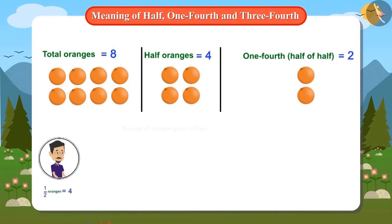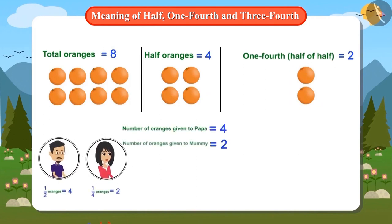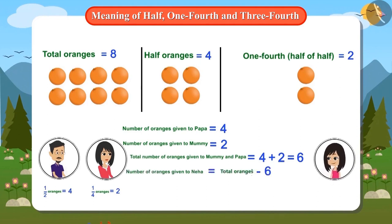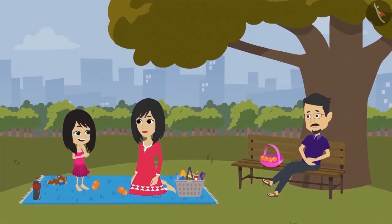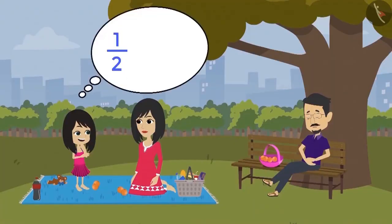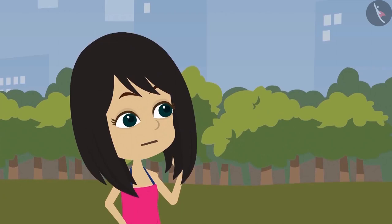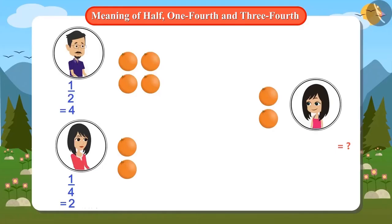This means papa will get four oranges and mummy will get two oranges. Now let's add these two — the answer is six oranges. This means that six oranges will be given to Neha's mummy and papa. Then how many oranges will Neha get? Neha will get two oranges. Neha figured out how many oranges would come after adding half oranges and quarter oranges. But if she has to tell how much of the total oranges came to the share of her mother and father, how will she tell?